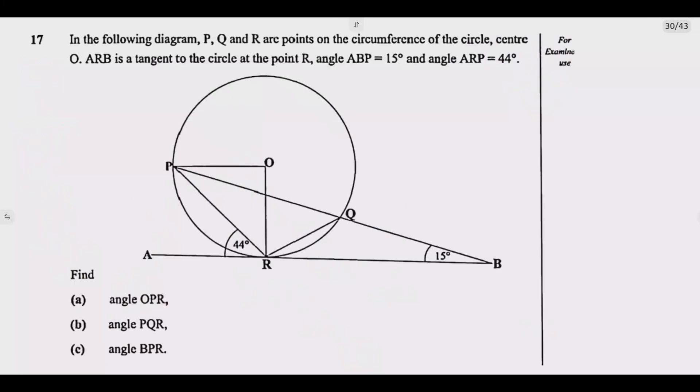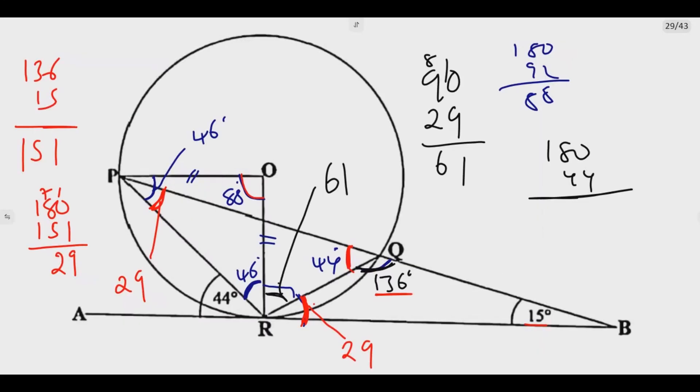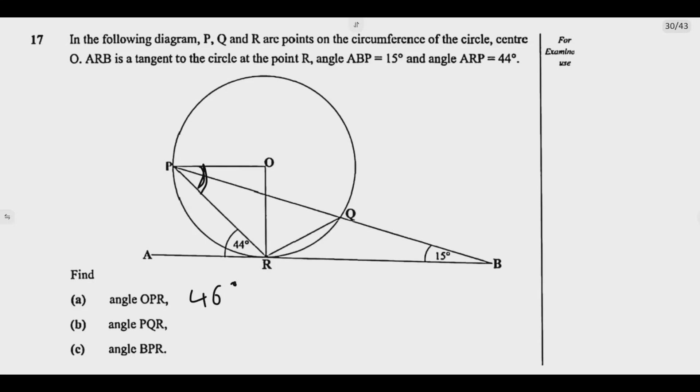So now let me just go to the questions. OPR is this angle. We've already found this angle. OPR is 46 degrees. Then PQR is this angle. We have to use half of this angle here. So this angle is 44 degrees. Then we're looking for BPR. So BPR is this small angle here. This angle is 29 degrees. So just as simple as that. 46 degrees, 44 degrees, then 29 degrees. You get the four marks. This is how you answer this question.